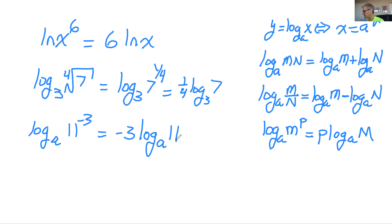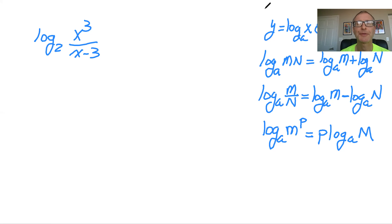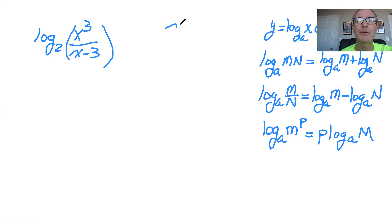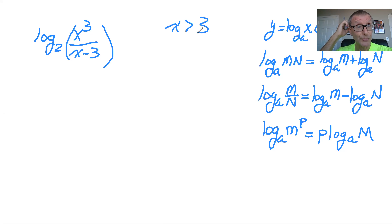I found the right page. Let's take a look at this problem: log base 2 of x cubed over (x minus 3). The first thing to realize is we can't have a divide by zero, so x cannot equal 3. And we can't have a negative argument for the log, so x has to be greater than 3. Most of the time the problem will indicate that, but you should realize it. So the strategy is to use all these properties to expand this into multiple logs.